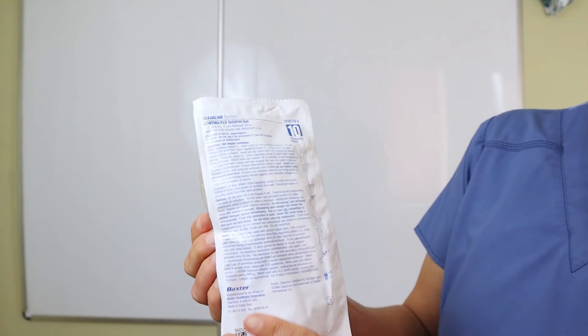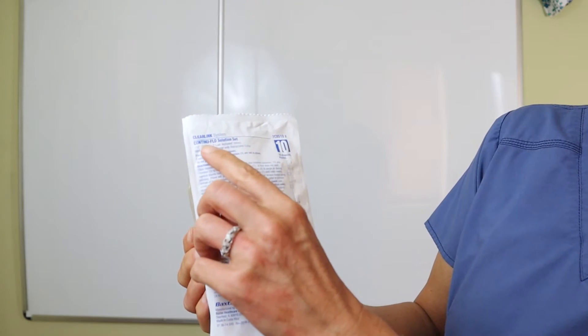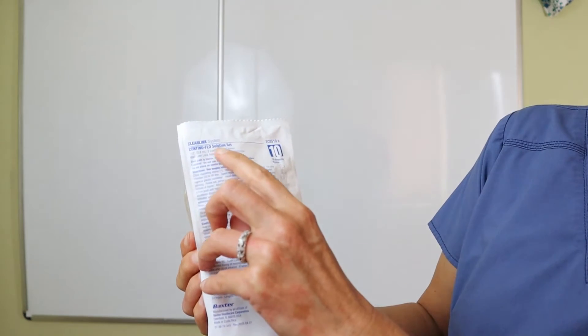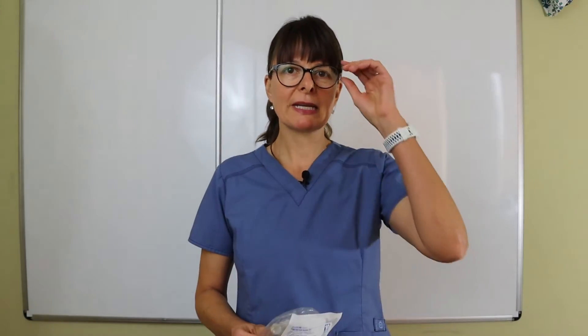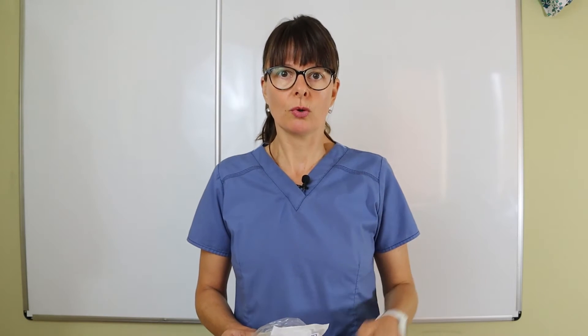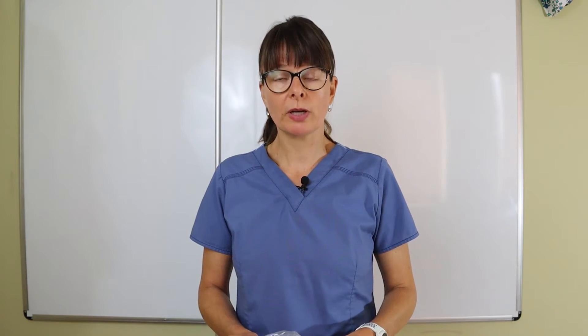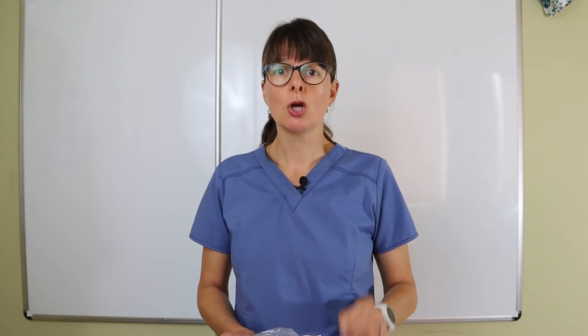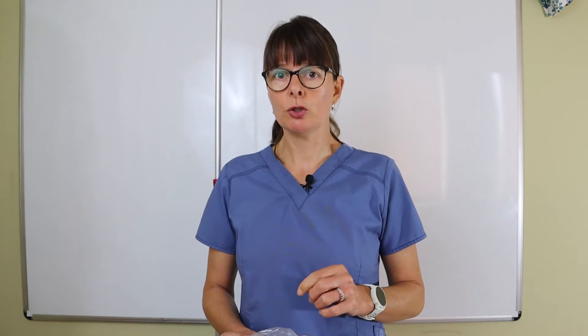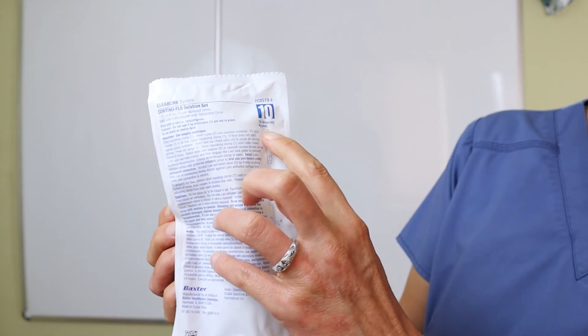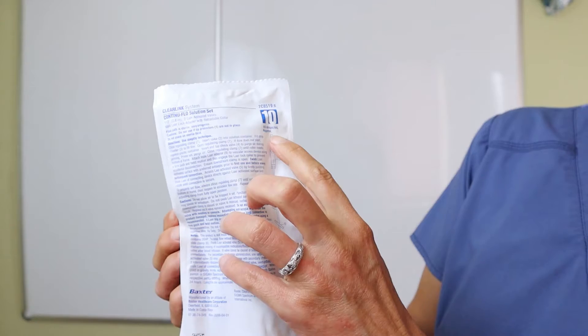On the packaging, it'll always tell you what this is. So in this case, this is a clear link system, continue flow set, and it shows us the drops per ml. Remember from your medication math or dosage calculation quizzes, when it comes to drips and drip rates, you always need to know the drops per milliliter that the IV tubing is providing. The packaging will tell you exactly that — in this case, this is 10 drops per ml.